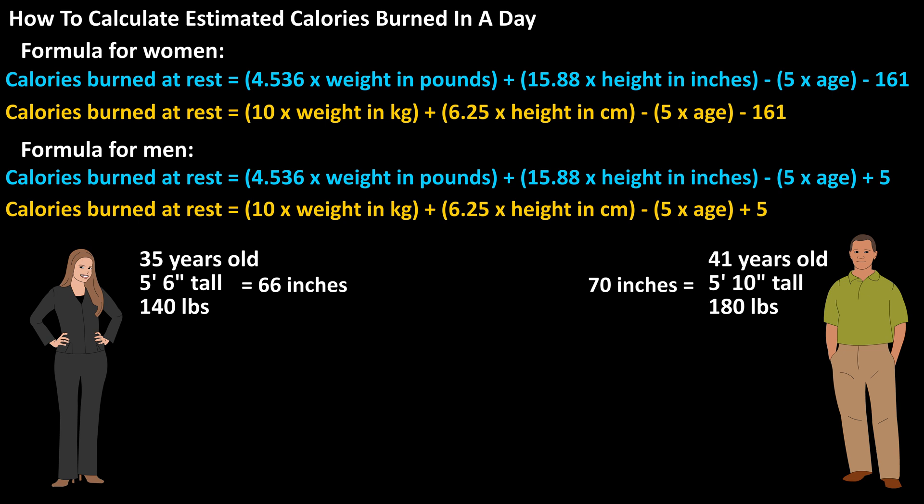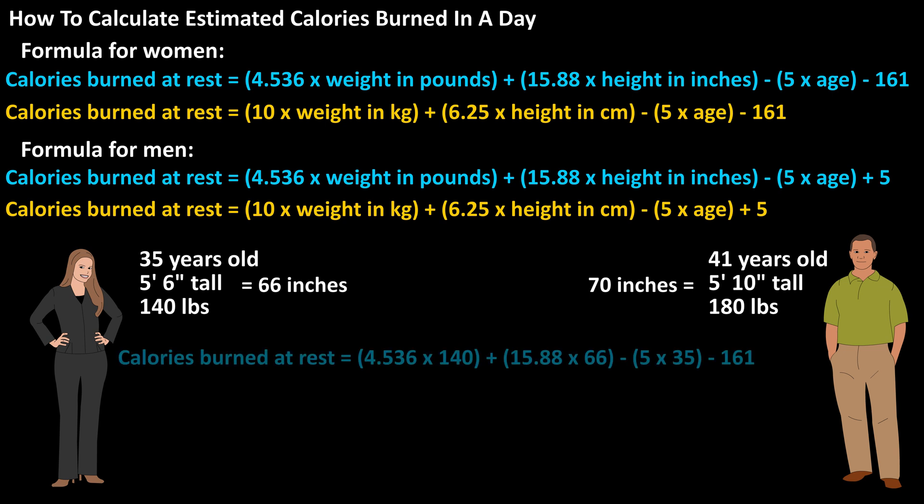For the woman, the formula would be: calories burned at rest equals 4.536 times 140 pounds, plus 15.88 times 66 inches — as 5 feet 6 inches is 66 inches in total — minus 5 times 35 years old, minus 161. This calculates to 1,347 calories per day, rounded off, burned at rest.